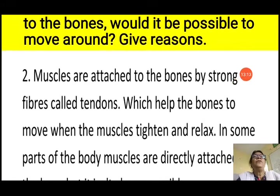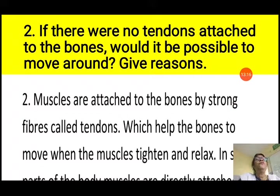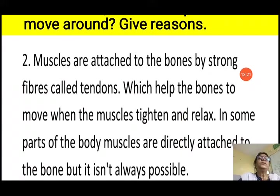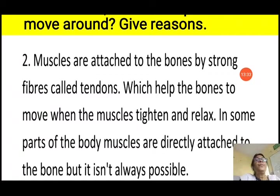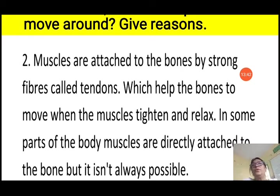Higher order question 2: If there were no tendons attached to the bones, would it be possible to move around? Muscles are attached to bones by strong fibres called tendons, which help bones move when muscles tighten and relax. In some parts of the body muscles are directly attached to bones, but that is not always possible. Without the help of tendons, movement of the bones would not be possible.